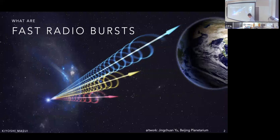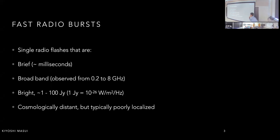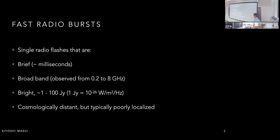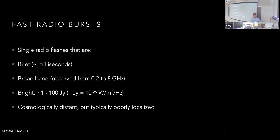Fast radio bursts are single radio flashes that are very brief — typically milliseconds in duration. They're broadband, observed from 200 MHz all the way up to 8 GHz. They're bright, with typical peak fluxes of one to a hundred Janskys. One Jansky is a unit of flux used in radio astronomy, roughly the brightness of a typical radio galaxy in the sky.